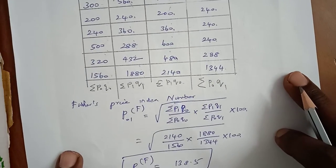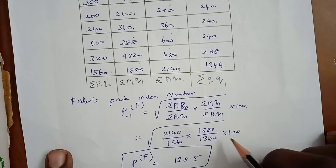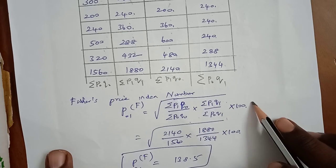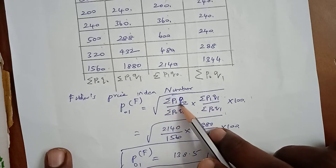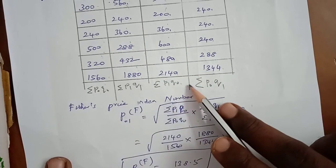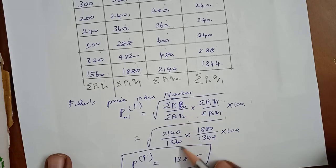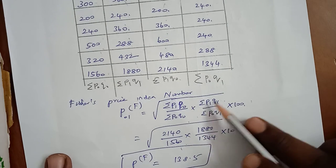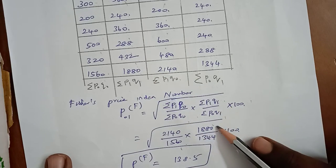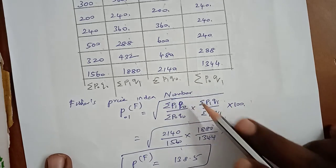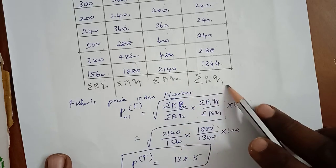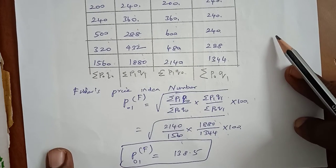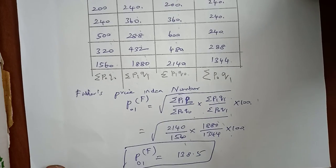Straight away applying the Fisher's ideal index number formula: P01(Fisher) = square root of (σP1Q0 / σP0Q0) × (σP1Q1 / σP0Q1) × 100. Substituting: √(2140/1560 × 1880/1344) × 100. So P01(Fisher) = 138.5. This is the result of Fisher's ideal index number.